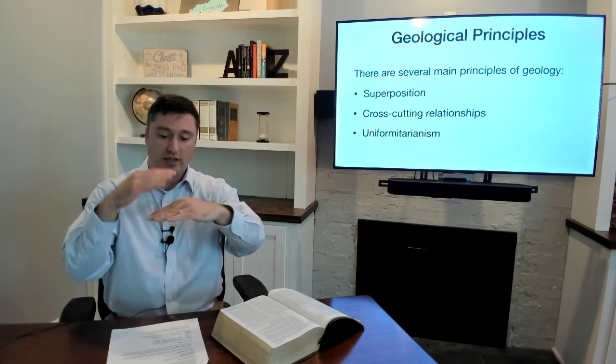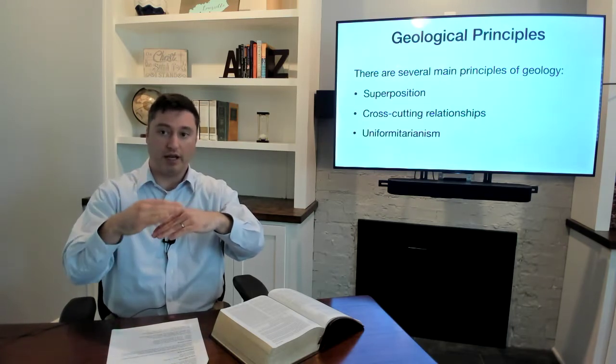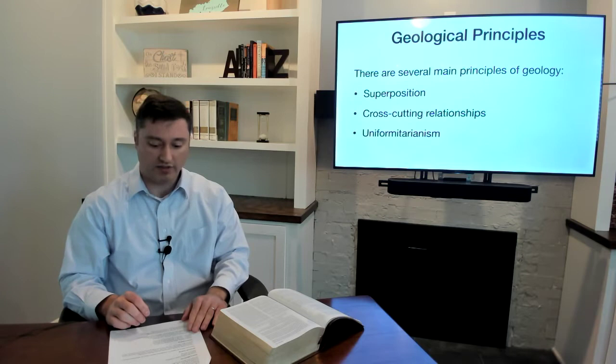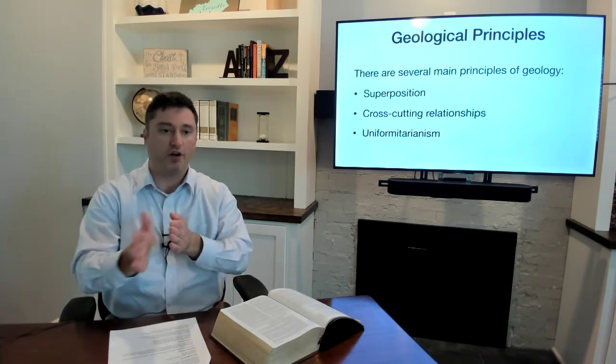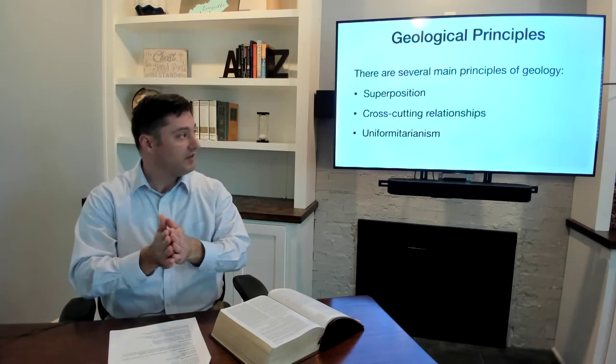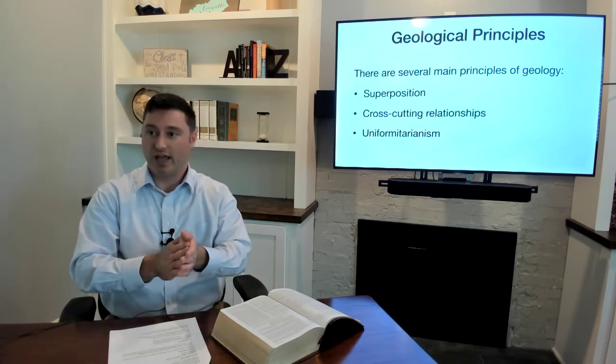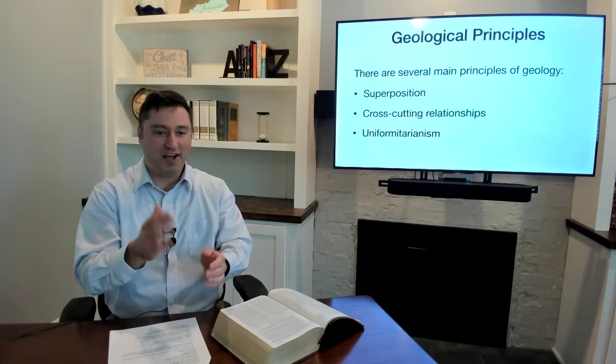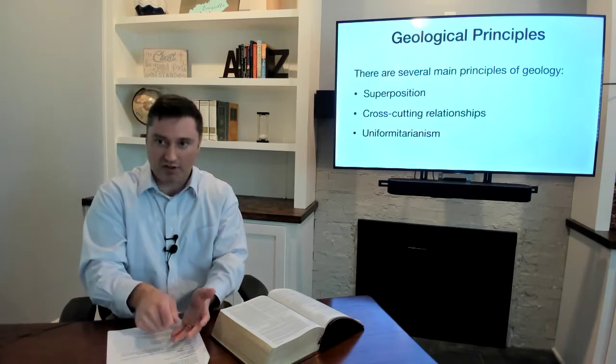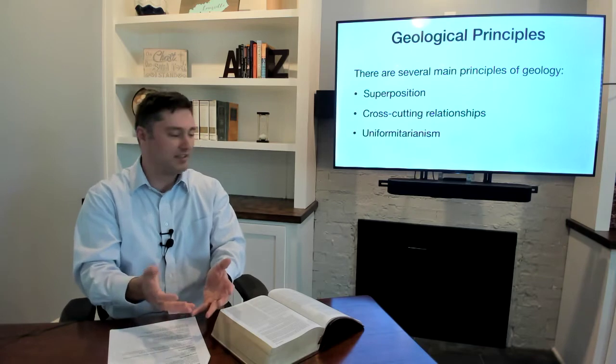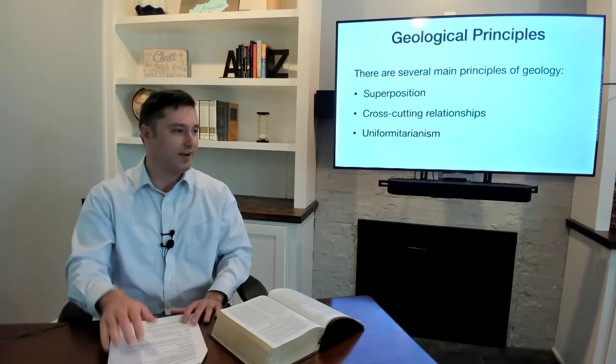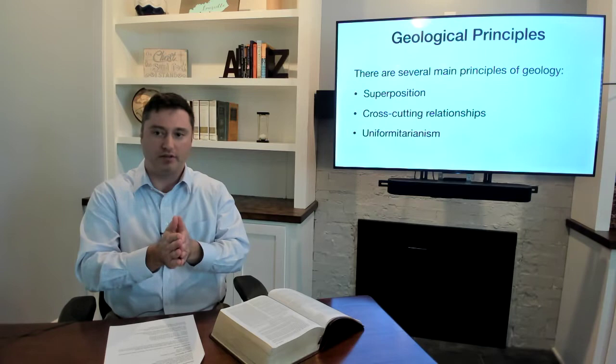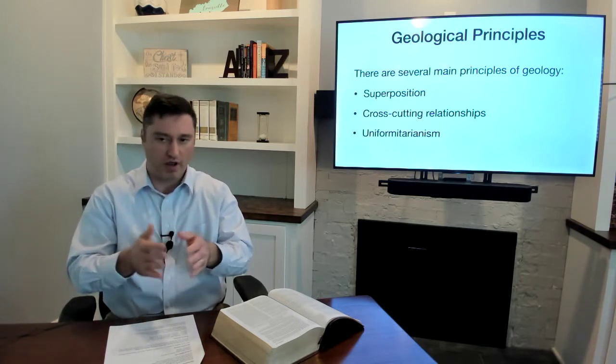The principle of cross-cutting relationships says that if there is tectonic activity on a fault, for example, on a fault line, that the fault is younger than the layers it cut through. And again, it sort of makes sense, right? I mean, if you're going to cut through something, it has to exist first. You can't cut through a cake and there be an imaginary cake and actually cut through it. The cake has to exist before you cut into the cake. And now I'm getting hungry, but that's another story. So if a fault cuts through a layer of rocks, the fault happened after the rocks were already there. So that can be a way of helping us date things.